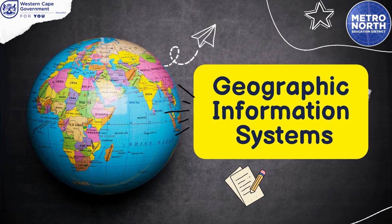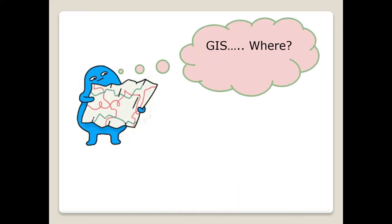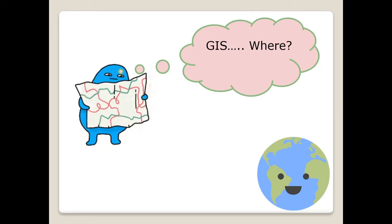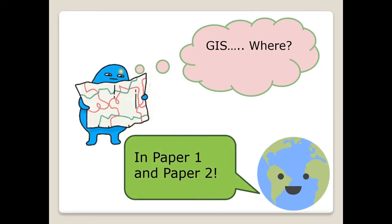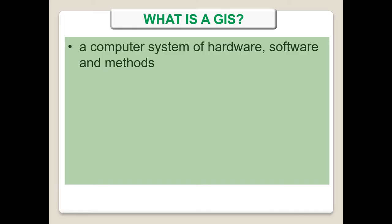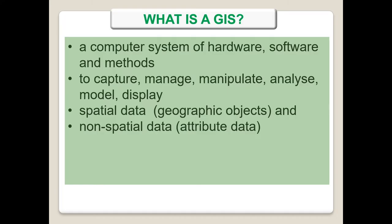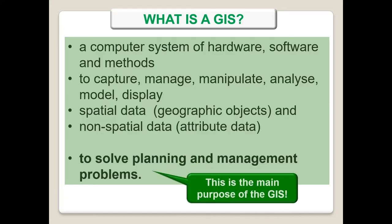Geographic Information Systems, or GIS in short. You will find GIS in both of your geography papers — in question 3 in your map work section of paper 1 and paper 2. What is a GIS? It is a computer system of hardware, software and methods used to capture, manage, manipulate, analyze, model and display various data sets. The main purpose of GIS is to solve planning and management problems.